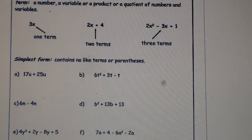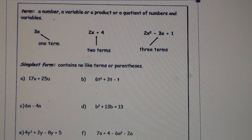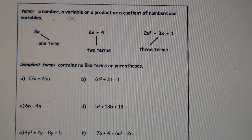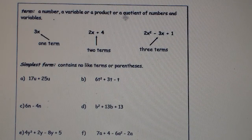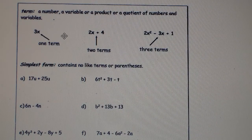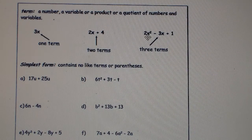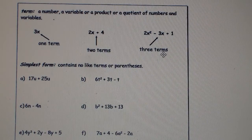Let's break down the picture from the handout. A term is a number, a variable, or a product or quotient of numbers and variables — that's one term. With two sets, like 2x + 4, that's two terms. And 2x² − 3x + 1 is an example of three terms — a trinomial.